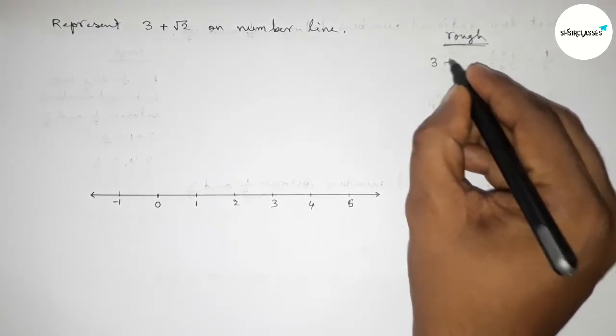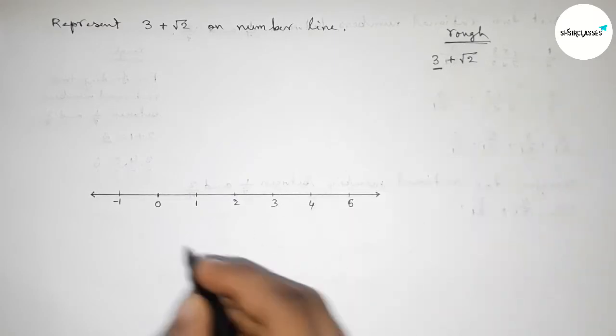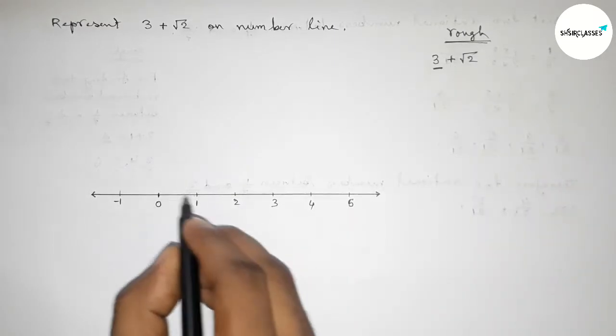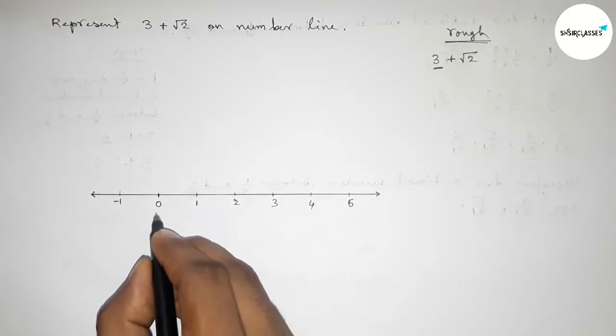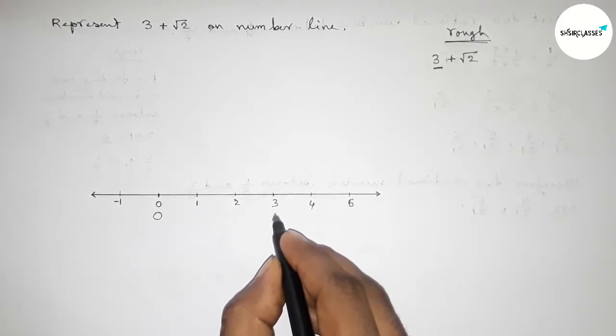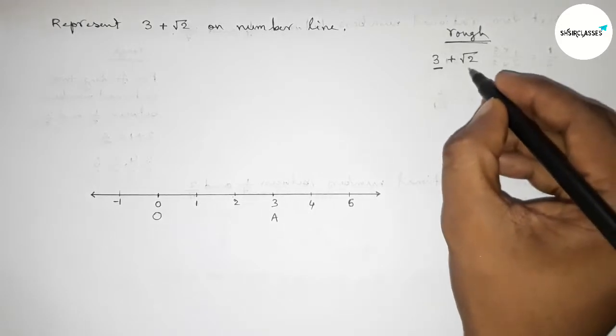We have to represent 3 plus root 2 on the number line. First, mark 3 unit length, counting from 0, 1, 2, 3. Between 0 to 3, take point O here and point A here, so OA is 3 unit length.